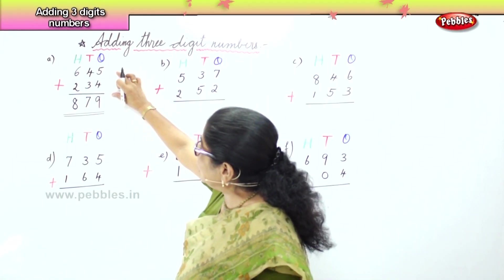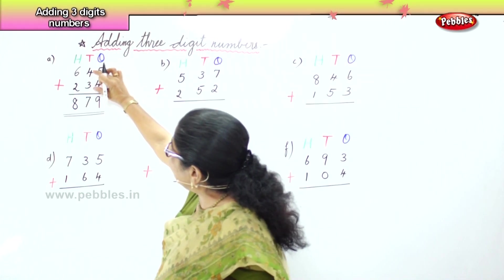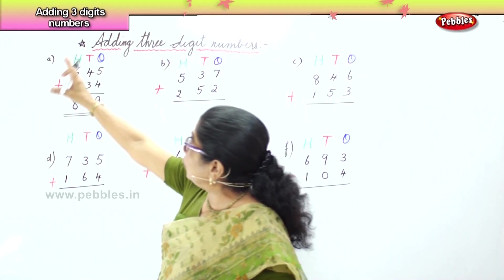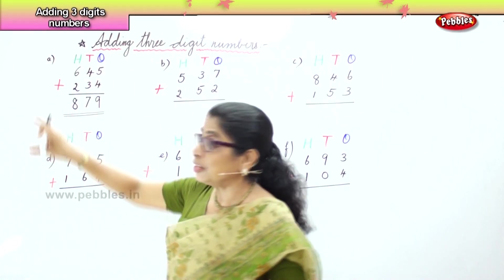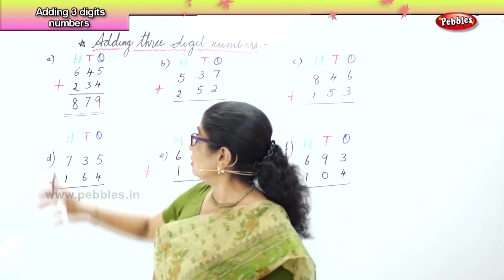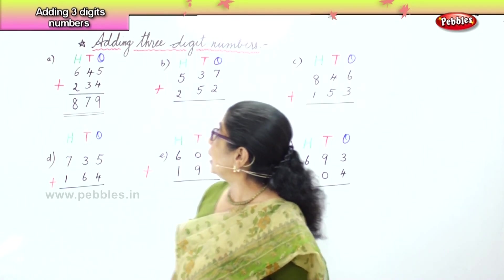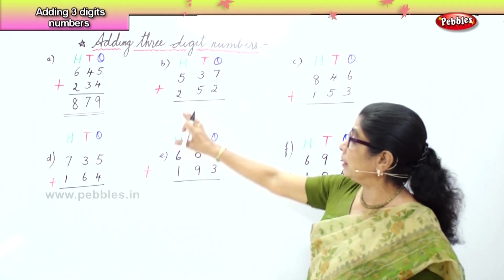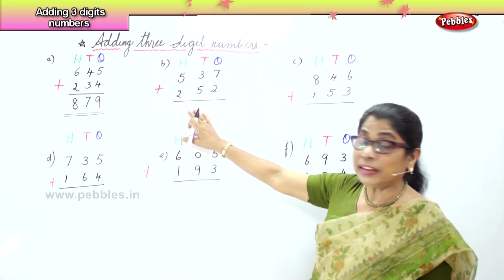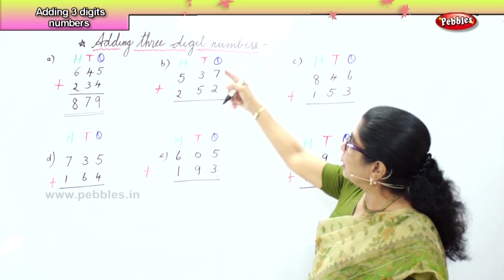So you added the ones place: five plus four is nine. You added the tens: four tens plus three tens is seven tens. Then we went to the hundreds: six hundreds and two hundreds make eight hundreds. So the answer is eight hundred and seventy-nine. Now the next sum is five hundred and thirty-seven plus two hundred and fifty-two.